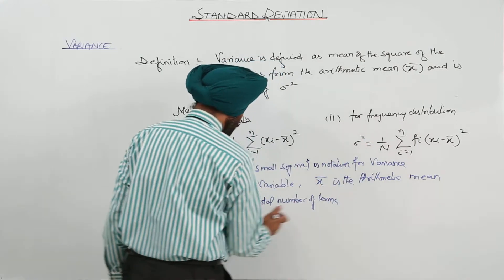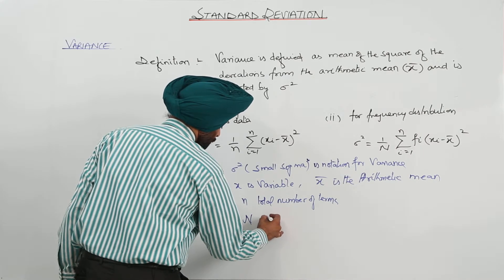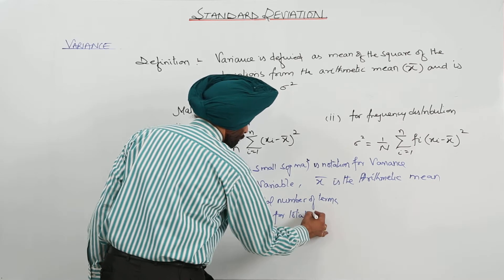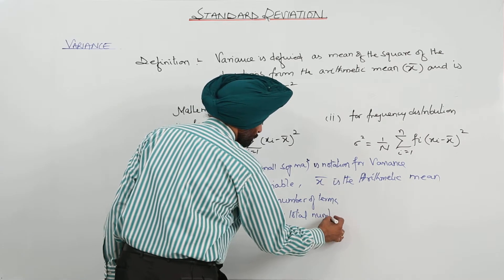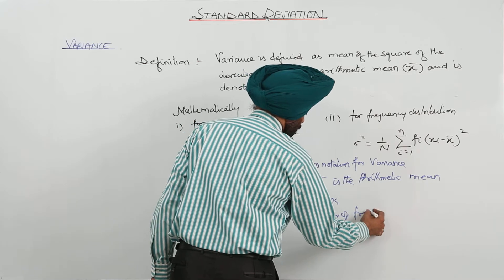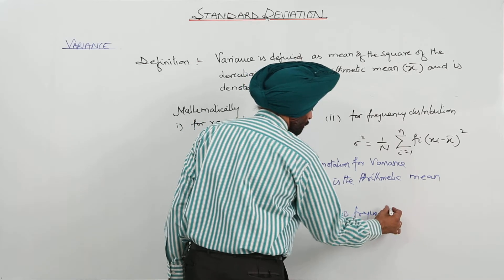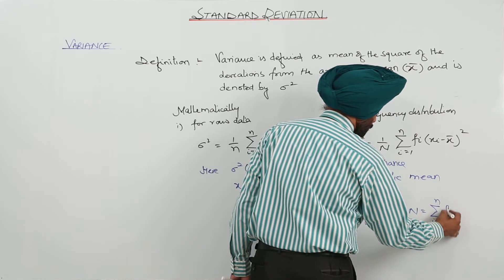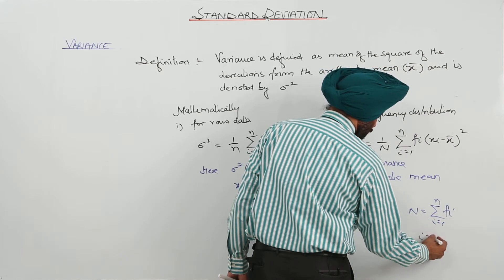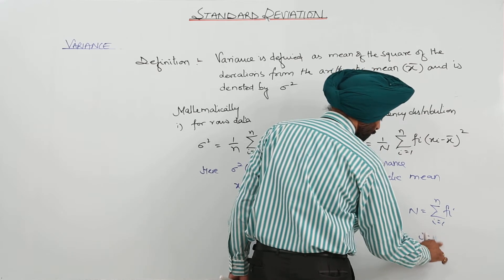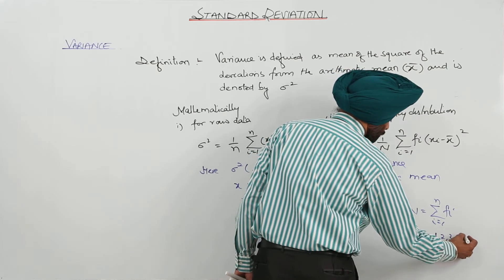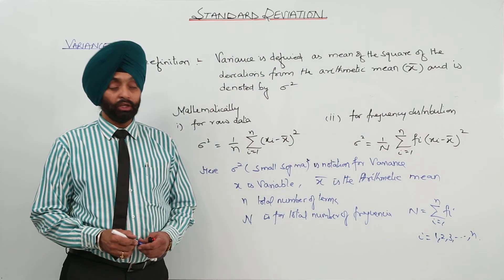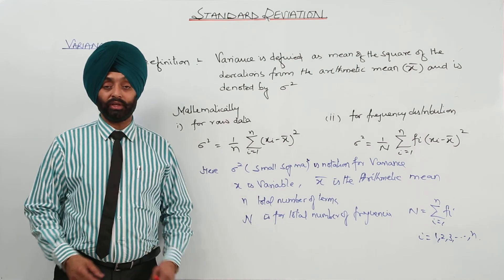And here capital N is for total number of frequencies. What we are writing? N is equal to summation for fi, where i stands for 1, 2, 3, depends how many number of total terms or total frequencies are there. So this is all about the formulas for the variance.